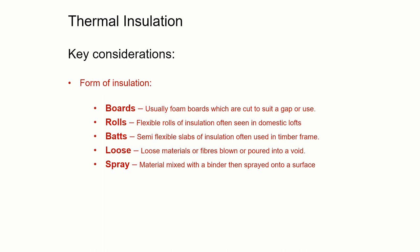Batts are a kind of mix between rolls and boards. They're semi-flexible slabs of material used in timber frame. They're flexible enough to be squeezed between timbers but rigid enough to stay there without any additional netting. Loose material tends to be fibres that are either blown or poured into place — it doesn't have to be fibrous, it could be loose polystyrene balls. More recently we're seeing spray material being put into place: a material mixed with a binder that's mechanically pumped and sprayed to cover all the construction and fill all the gaps.